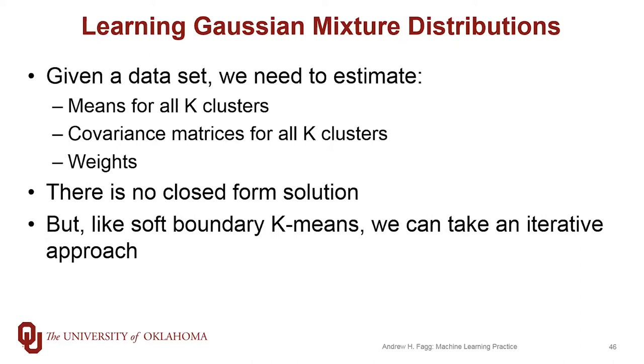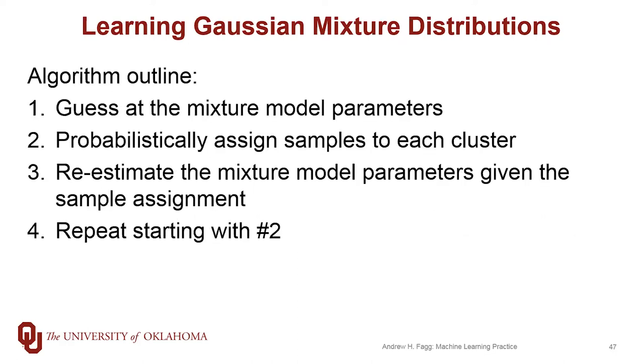There is no closed form solution to deriving all of these model parameters, but just as we saw with soft boundary k-means, we can take an iterative approach to estimating these. So the outline of the algorithm looks like this, and then we'll get into some of the details.